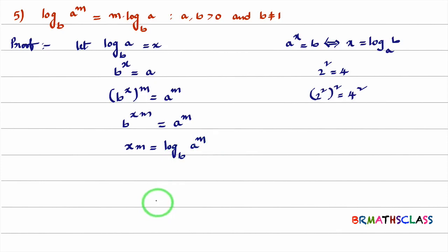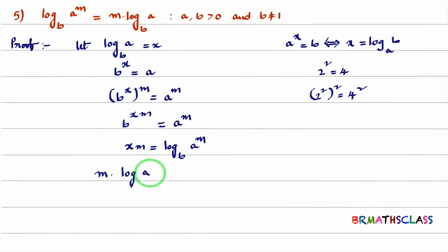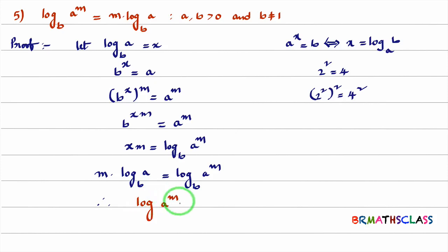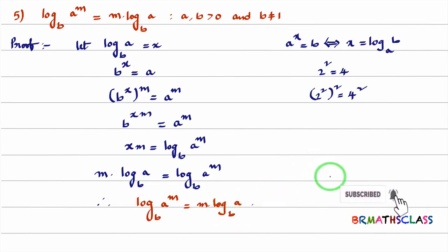I hope you are understanding. xm is nothing but m·x. So I'll write m into x. What is x? x is log(a) base b. We considered log(a) base b as x, so this equals logarithm of a^m base b. This is one of the important results we use very frequently in calculus. We proved that logarithm of a^m base b can be written as m·log(a) base b.